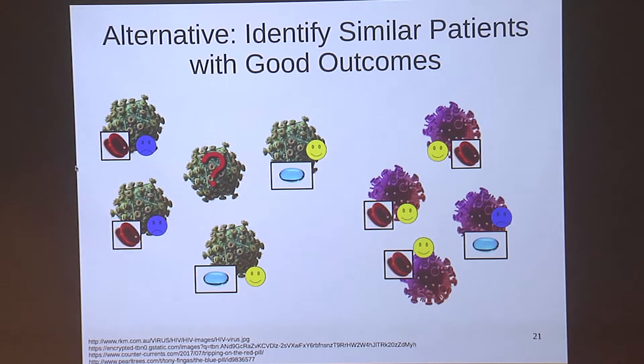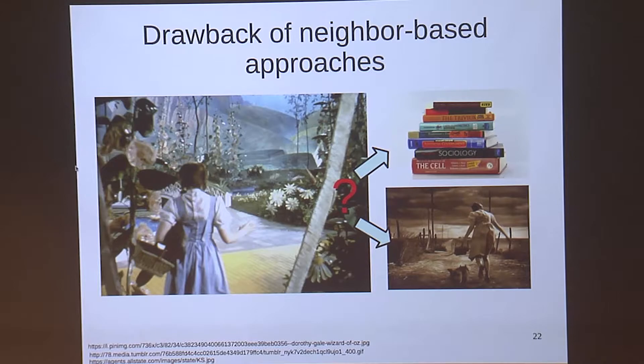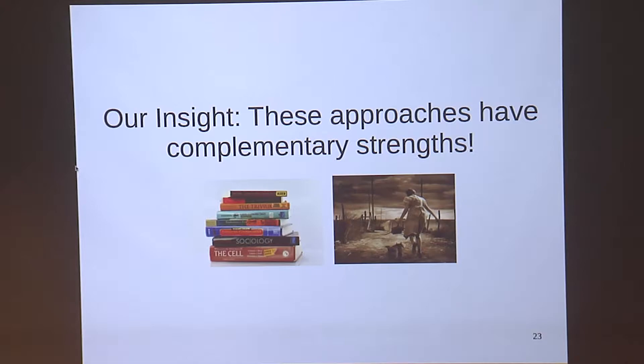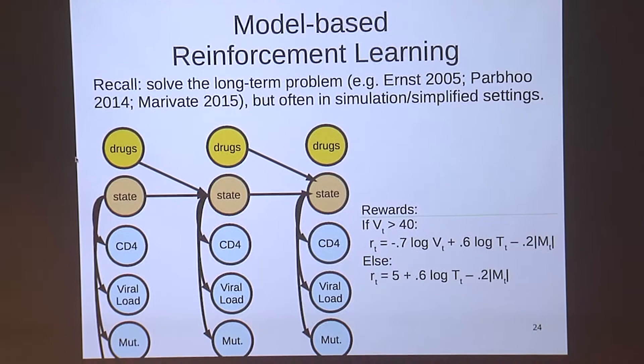But this also has drawbacks — when you find yourself not in Kansas anymore, you wish you'd brought some books to understand what's going on. The key insight is that these two ideas have complementary strengths: sometimes you can rely on experience and what you see around you, and sometimes you need models — even if models are too simple, when you don't have experience, that's the best you can do.